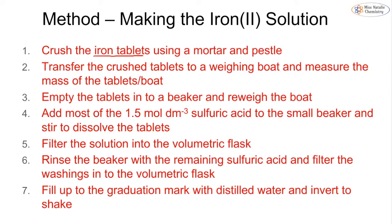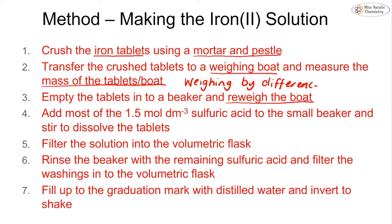The first thing we have to do is make our iron standard solution. We crush our iron tablets using a mortar and pestle, transfer the crushed tablets to a weighing boat, and measure the mass on the boat. We then empty the tablets into a beaker and re-weigh the boat — this is known as weighing by difference, a method from year 12. This accounts for the fact that we may not get every single grain of iron from the weighing boat.